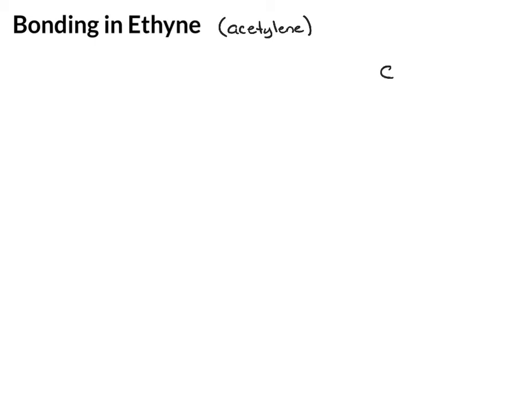Looking at the structure, we have the triple bond. Carbon has to have four bonds, so we have a hydrogen on each carbon so that it has four bonds. Your first bond between the two atoms will be a sigma bond. It doesn't matter which of the three you choose as your first bond. Then your second and third bonds are pi bonds.